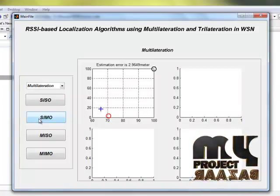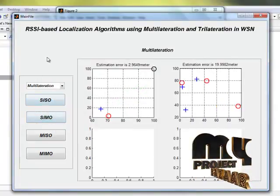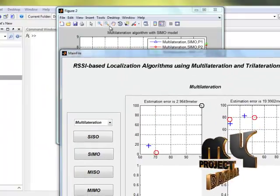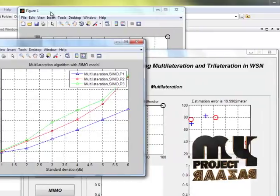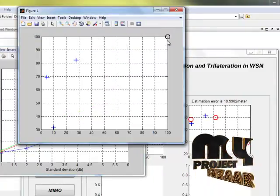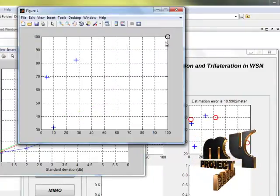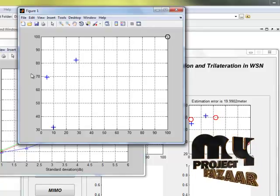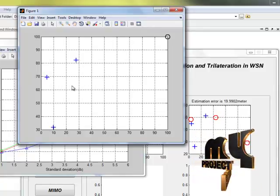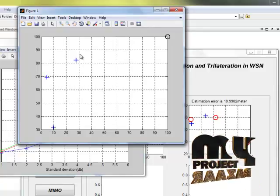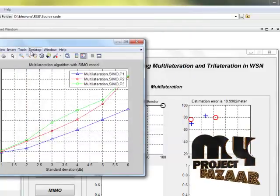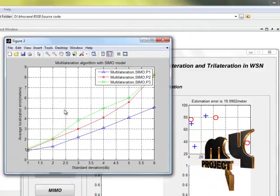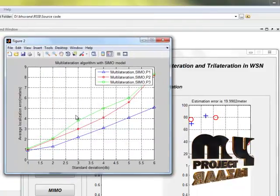Then single input with multi outputs. Here single input so the anchor node is 1, and multi output means mobile nodes are this. The number of output may be infinity numbers. This is the graph plotted for single input with multi output.